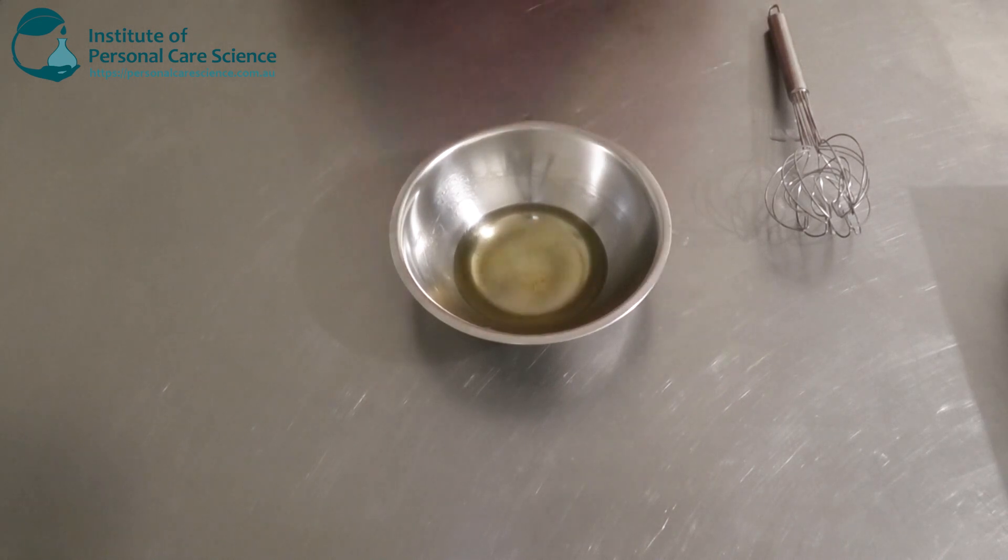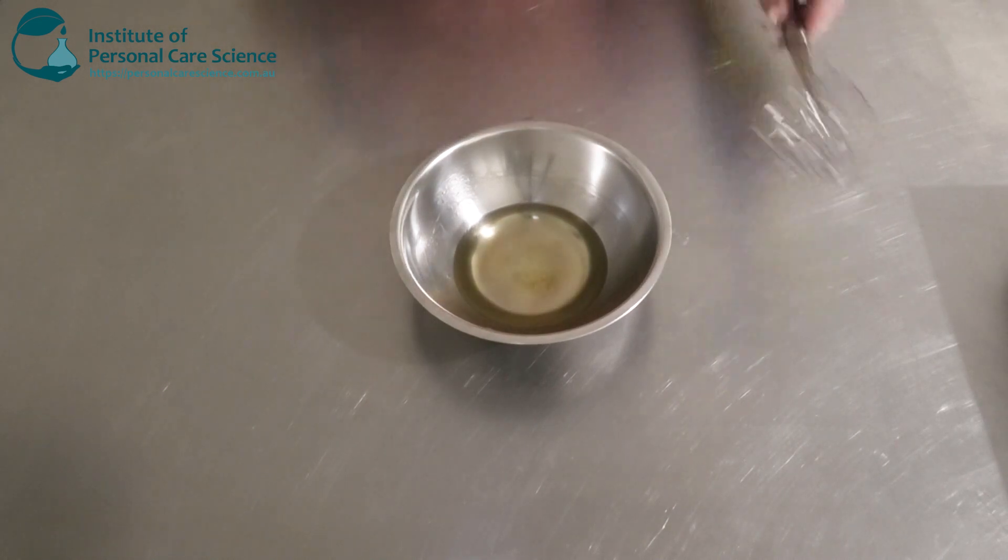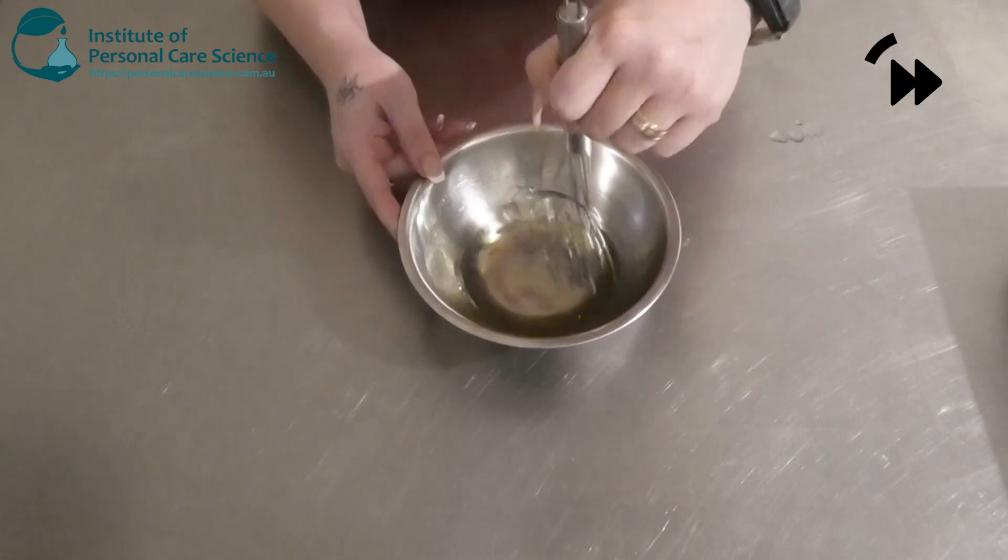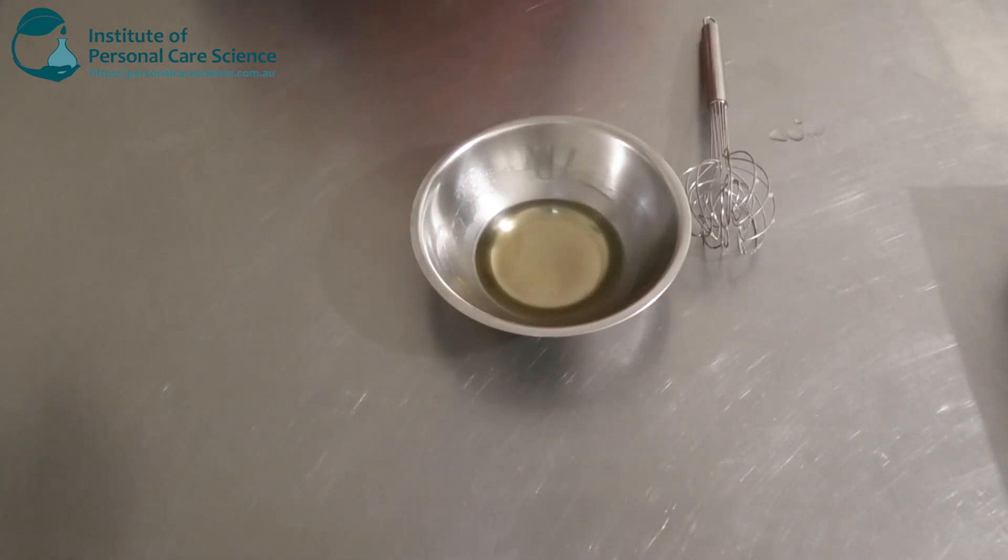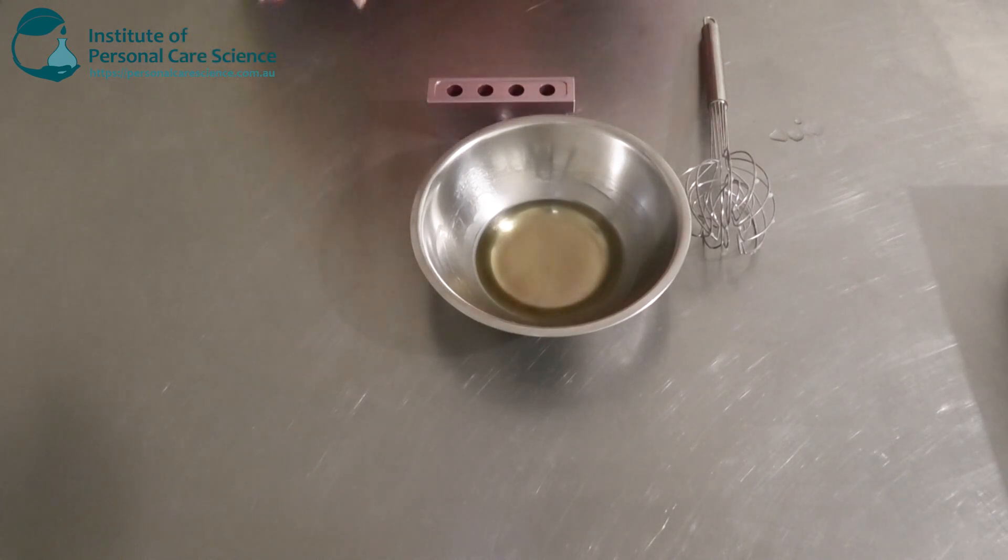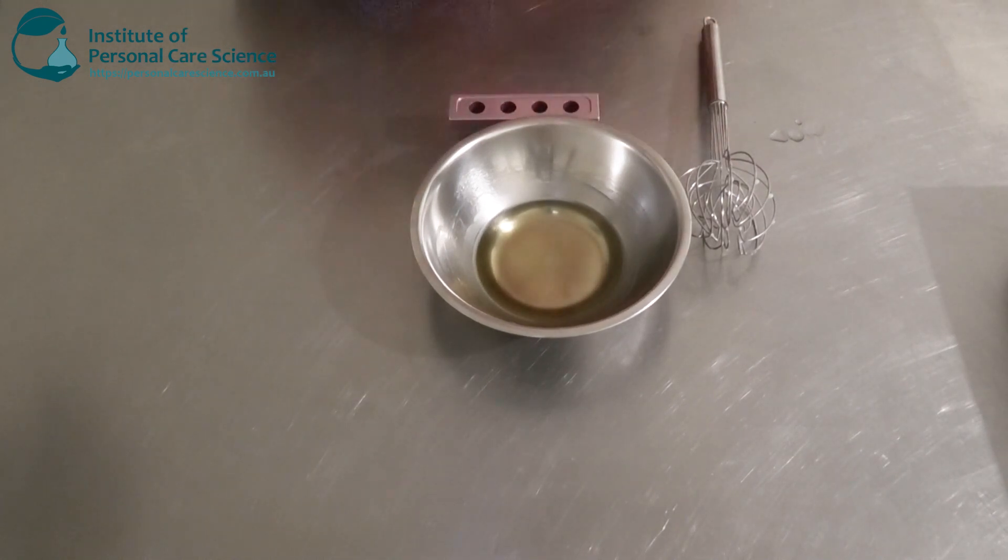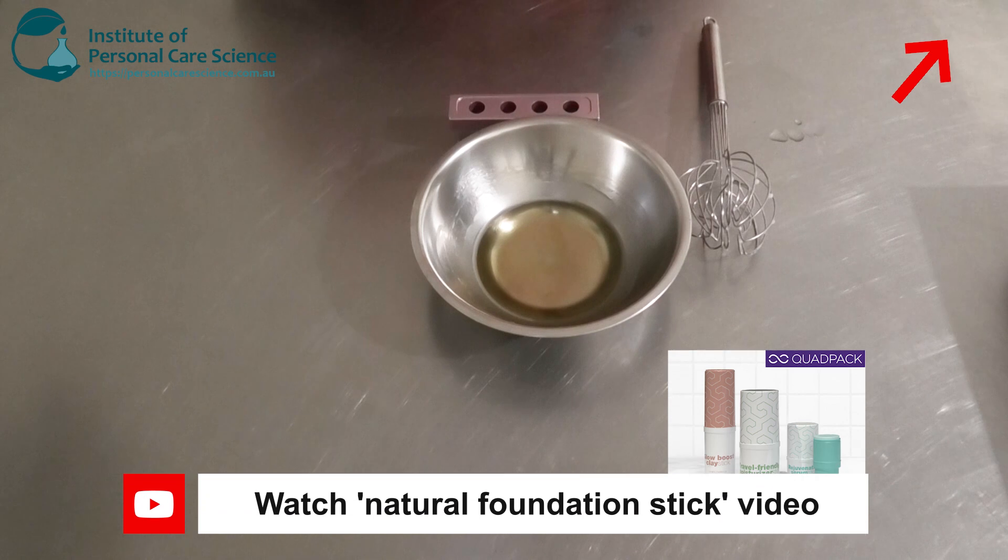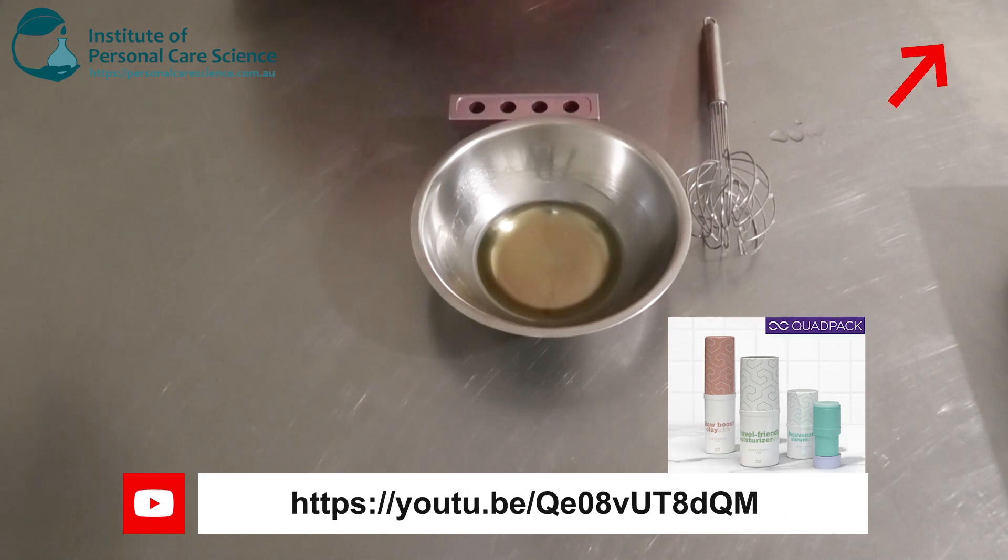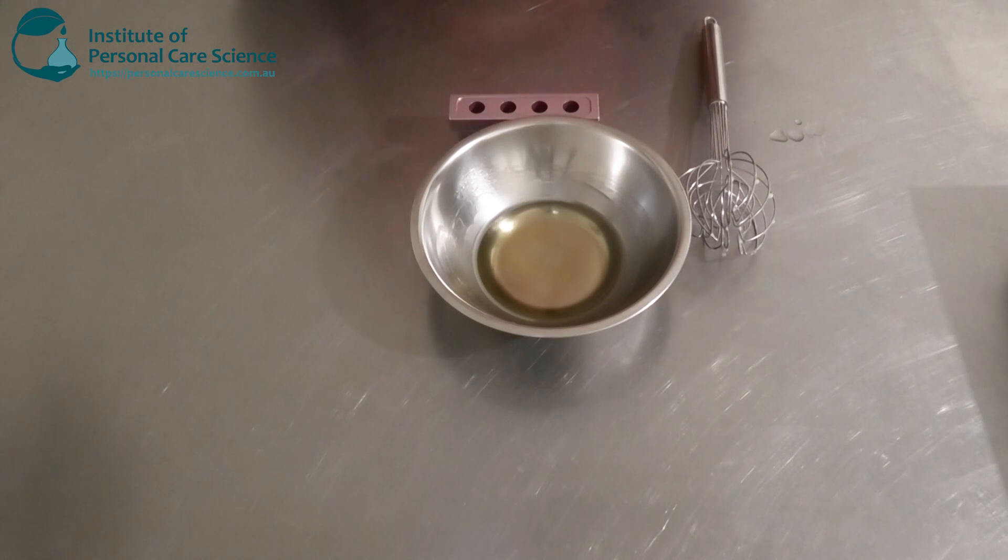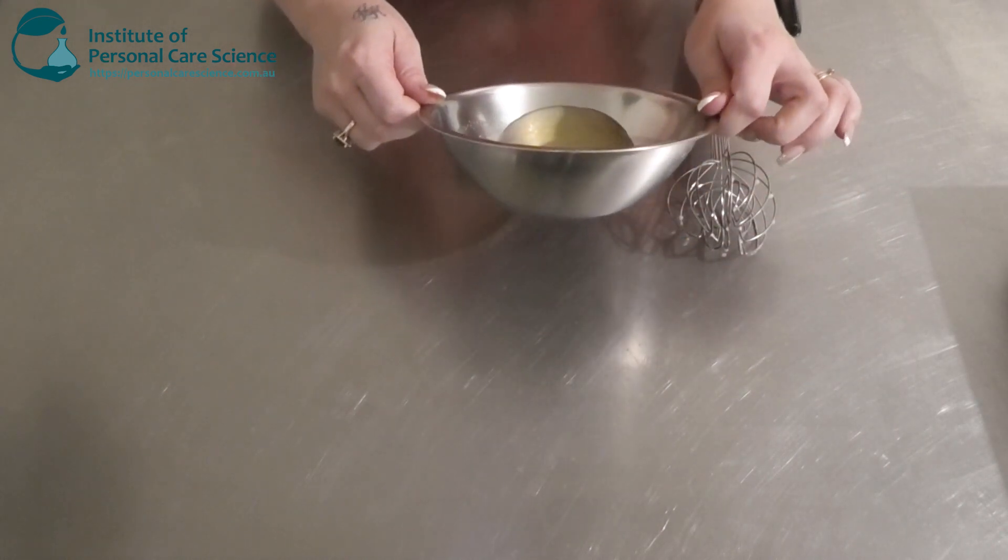Now you do want to pour this off while it's still hot. I'm going to pour it off into some lipstick molds. I don't have any containers on me, but you can put it in some really good stick containers. I did do a video a couple of months ago using some quad pack stick packaging. They're really good because they're recycled and reusable, but I'm going to go ahead and just use a lipstick mold just for this one.